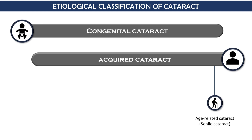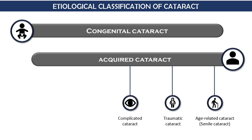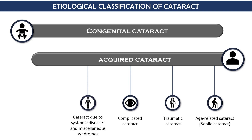Acquired cataract can also be due to trauma, and is known as traumatic cataract. Next is complicated cataract — when a cataract develops due to any other ocular disease or pathology, it is known as complicated cataract. Then there is a group of cataracts due to systemic diseases, which we will classify further in another video. Lastly, under acquired cataract, there are toxic cataracts, meaning cataracts caused by drugs.